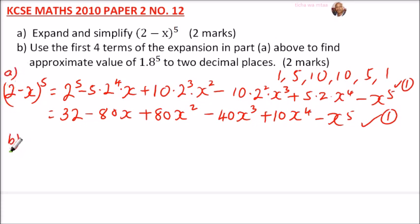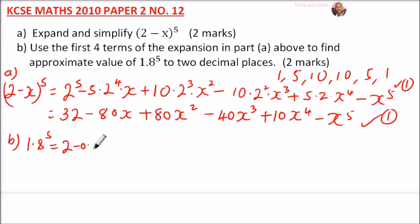For Part B, we use the first four terms to approximate 1.8^5. The key is to connect 1.8 to the expression (2 - x). We can write 1.8 = 2 - 0.2, so (2 - 0.2)^5 = 1.8^5. This means x = 0.2, which we substitute into the expansion.